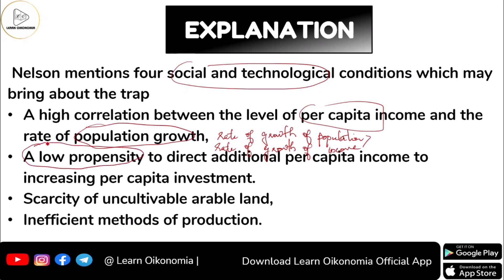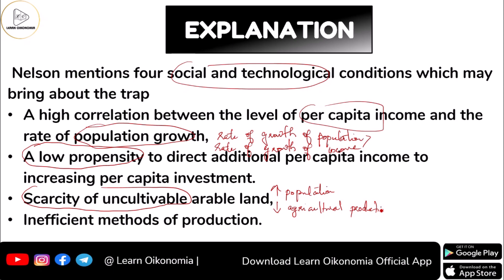Second, a low propensity to direct additional per capita income toward increasing per capita investment is considered another important factor driving the economy to a low-level equilibrium. Third, Nelson pointed out that scarcity of cultivable arable land can bring about a low-level equilibrium trap. When population increases, you need food, which requires agriculture, and for agriculture you need new land. If there is scarcity of land, it reduces agricultural production, which may lead to problems like famine.